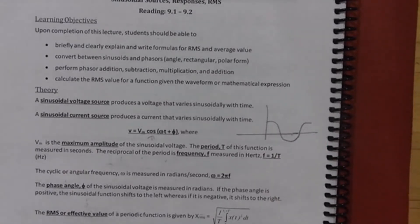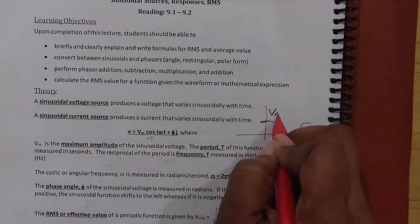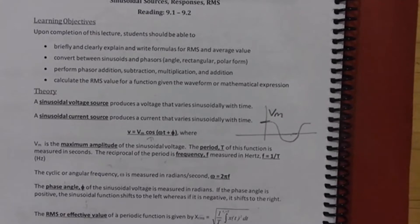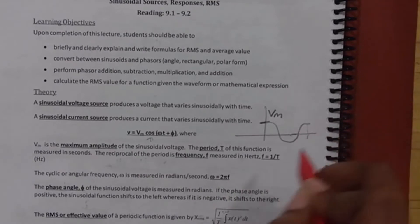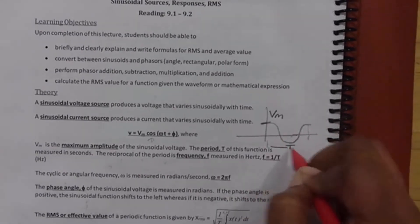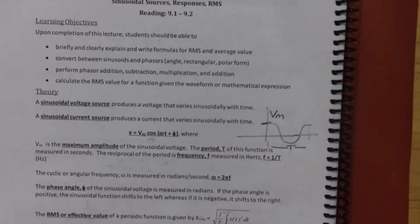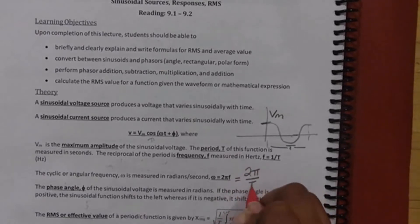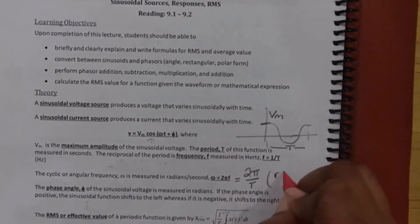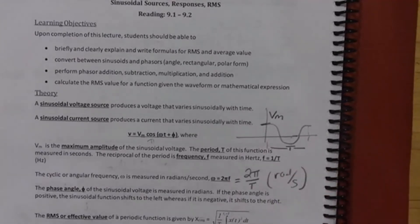A sinusoid is defined as V_m cosine(ωt + φ), where V_m is the maximum amplitude, and ω is the frequency in radians per second. ω equals 2πf, and also 2π divided by the period T. The units for ω are radians per second.